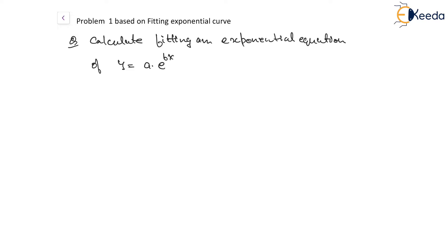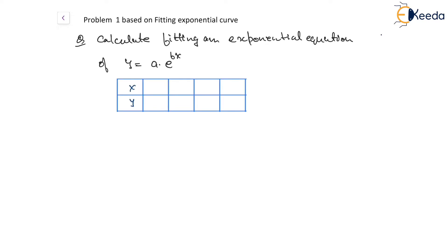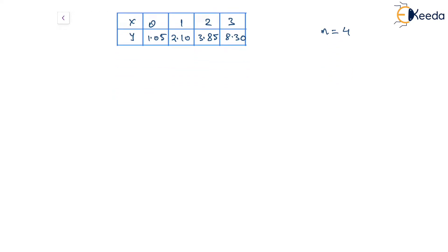The data is provided as such. We have got 4 data points, so we can say that n will be 4 in this case. Using this, we have to form an equation of the form y equal to a e to the power of bx. This is the curve to be fitted.